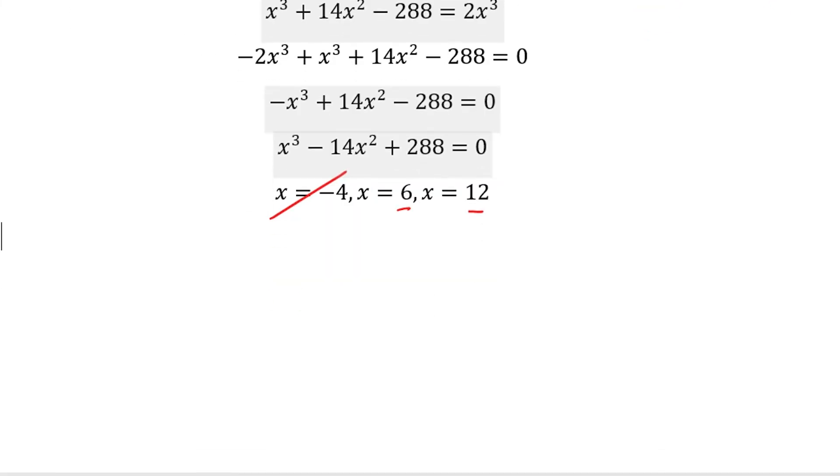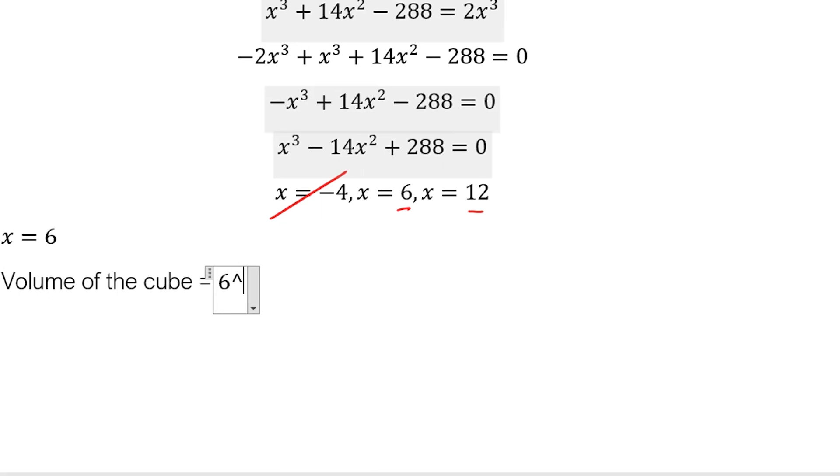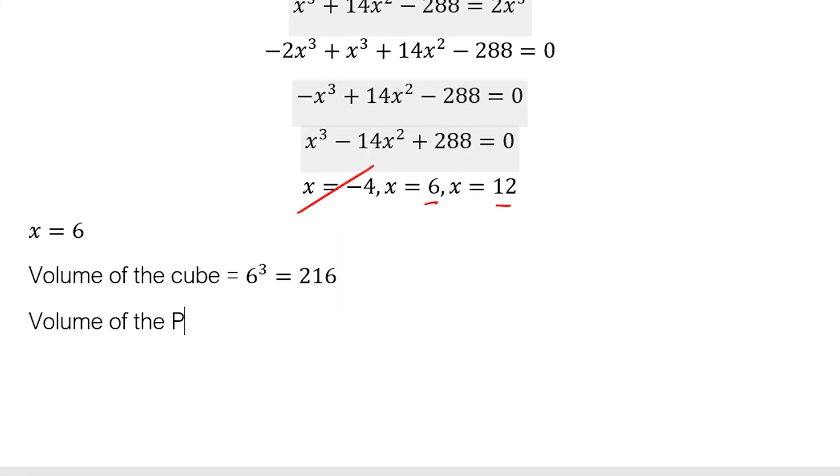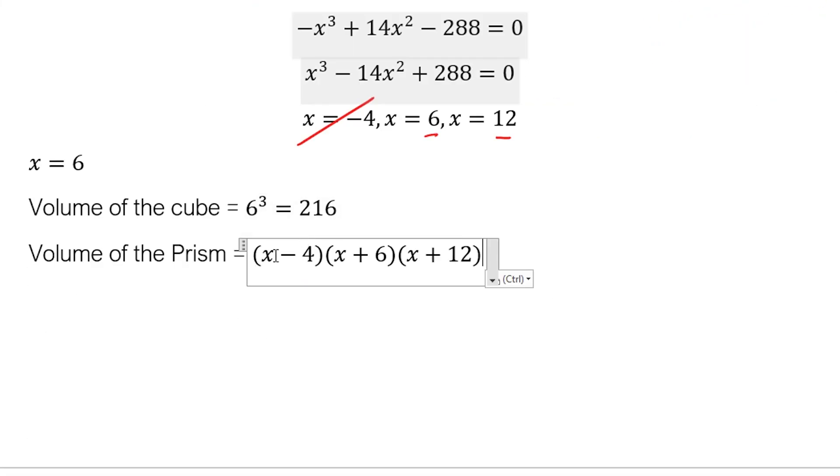So say for example, if x is equal to 6, then the volume of the cube is equal to 6 cubed, and this is equivalent to 216. Now, the volume of the prism is equivalent to this one. Let's substitute 6. If we substitute 6 here, we will be left with 2 times 12 times 18, which will give us 432. Is this new volume double the original? Yes. 432 is equal to twice of 216. So x equals 6 can be a solution. Therefore, x equals 6 is a solution.